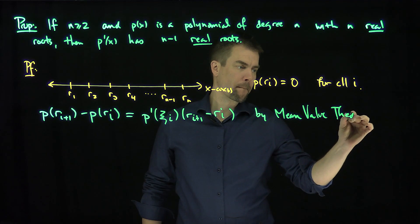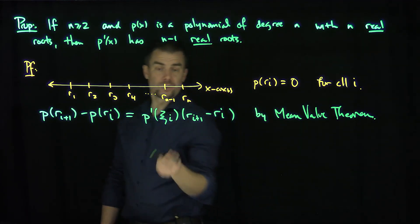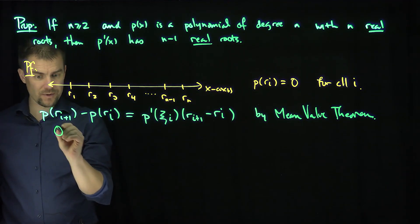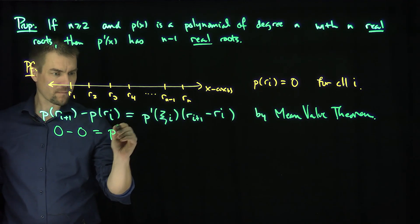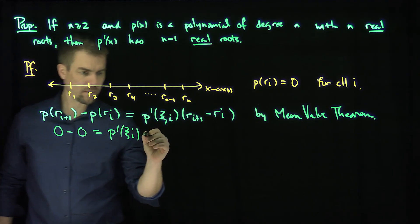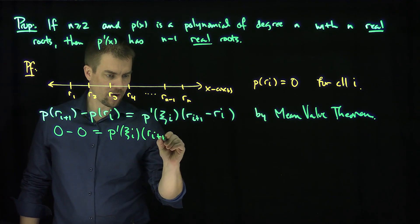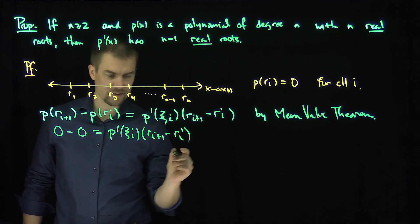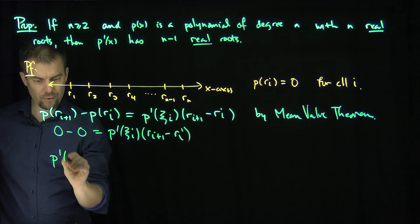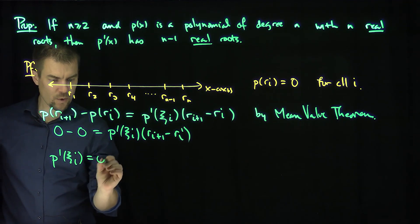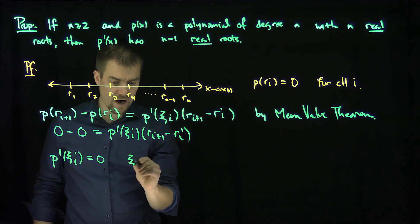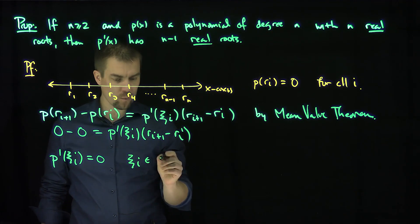Okay. So what we've just established over here is that since this is 0 and this is 0, and this is non-zero, r(i+1) minus ri is not 0, we've just shown that p'(xi) equals 0. Where do these xi reside? Where xi resides in between where and where?